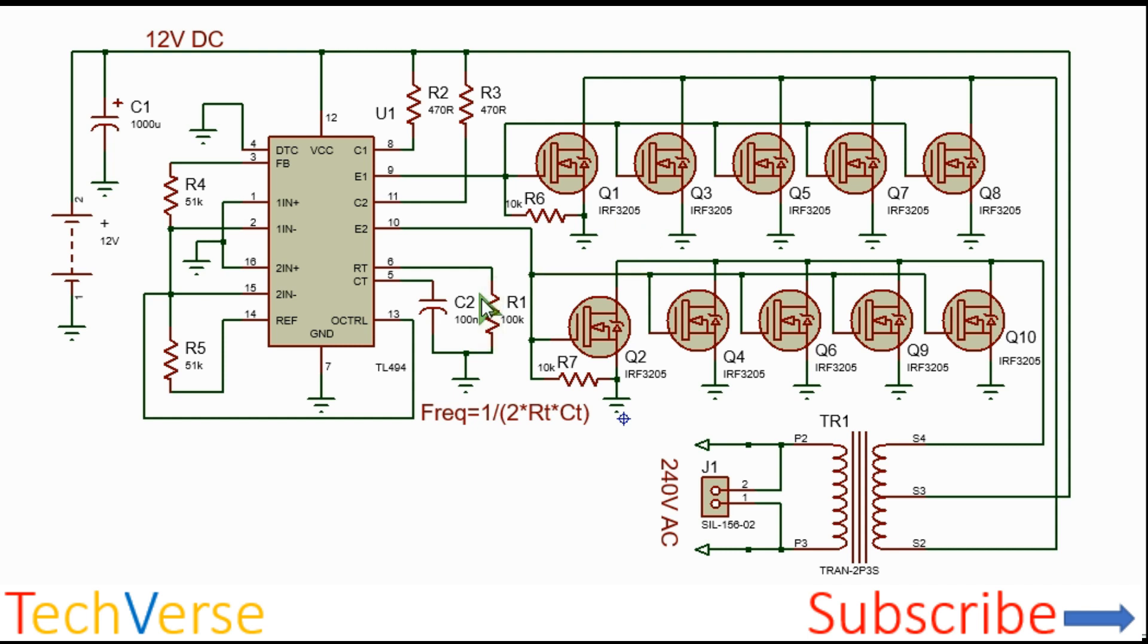Here's how this works. When E1 is high, Q1, Q3, Q7, Q5, and Q8 will turn on, and this will allow current to flow through the lower side of the primary winding through the MOSFETs into ground. When E1 turns off, all these MOSFETs will turn off.